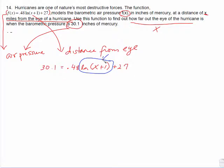We must isolate this natural log part to start with. So we've got to get rid of this other stuff. So this says plus 27. To undo that, subtract 27 from both sides.